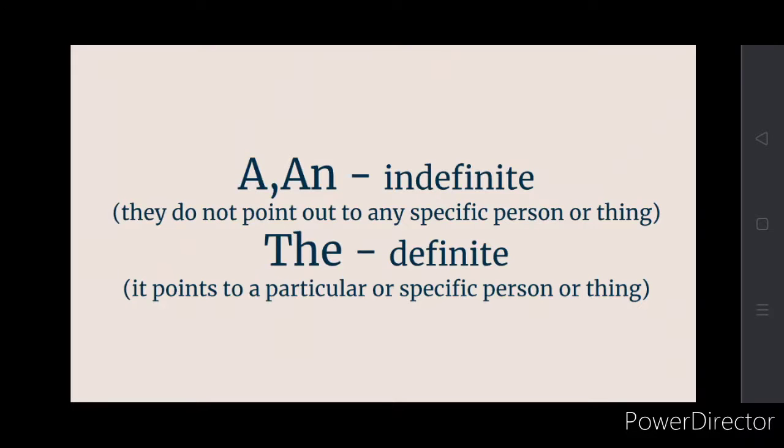So there are two types of articles: indefinite and definite. A and an are the types of indefinite articles. They do not point out to any specific person or thing.